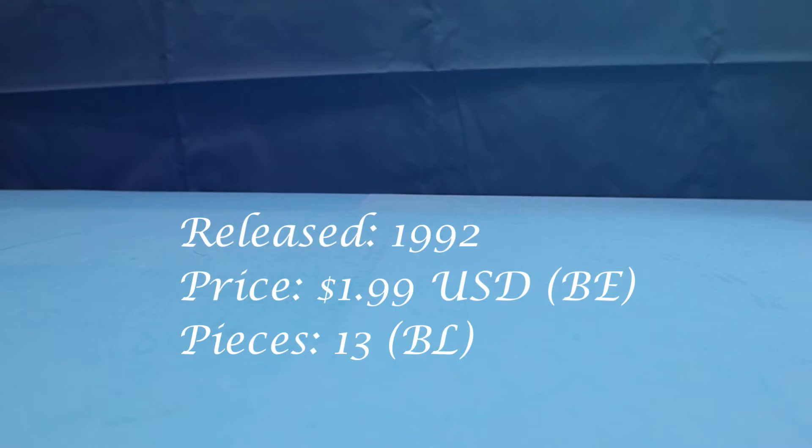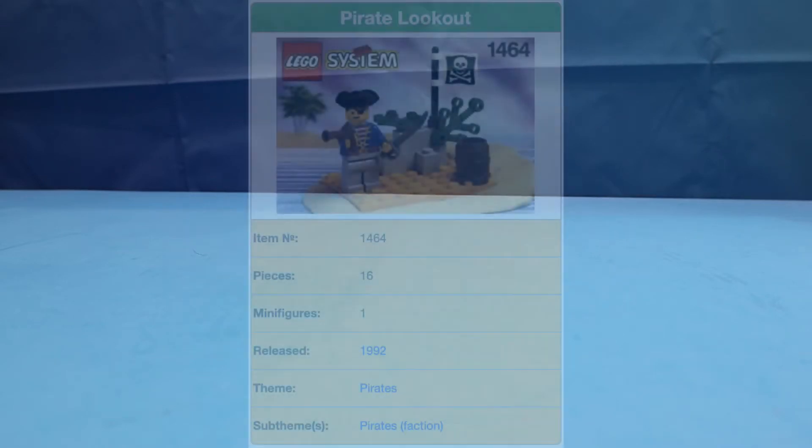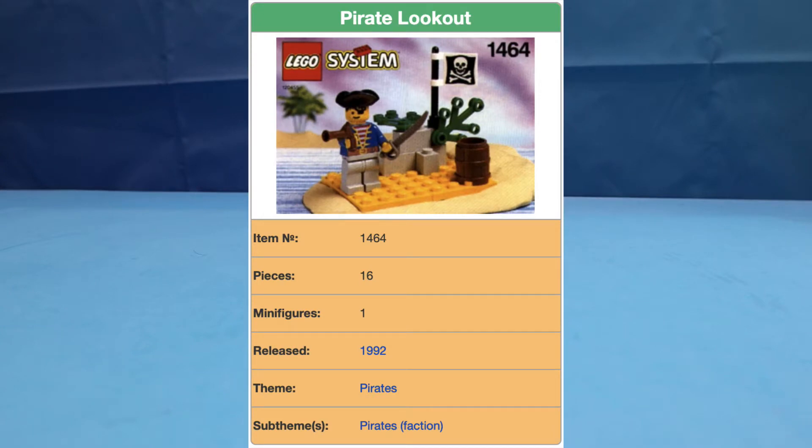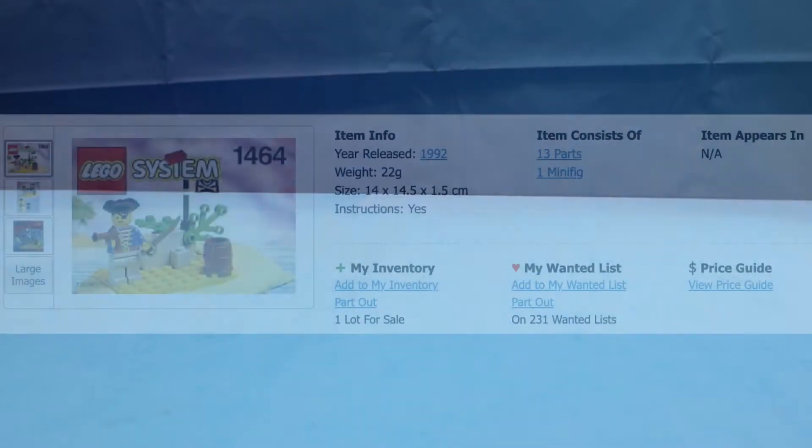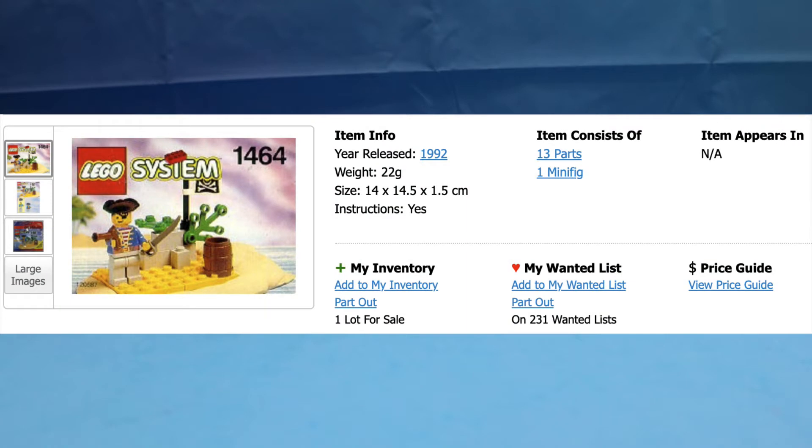There's about 13 pieces if you go by BrickLink, 16 if you use Brickipedia, and I think because BrickLink doesn't count the minifigs. There's not a lot of pieces so I think instead of a speed build I'll just build it in real time.